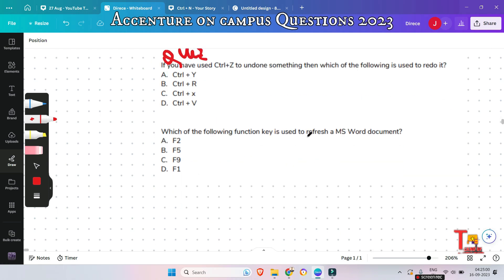Which of the following function key is used to refresh a MS Word document? F2, F5, F9, F1. So, the answer will be F5.